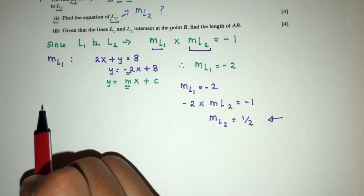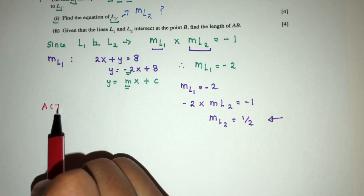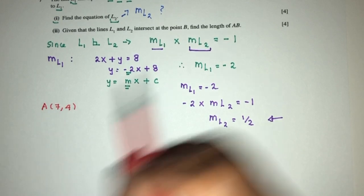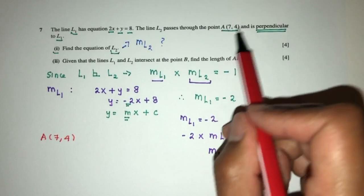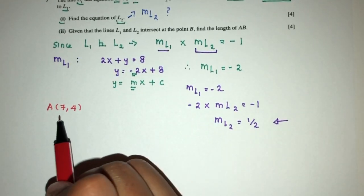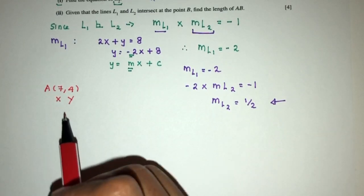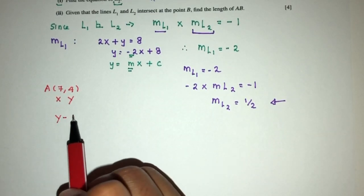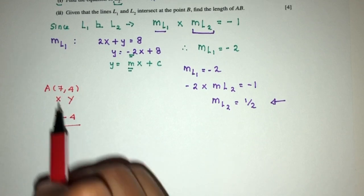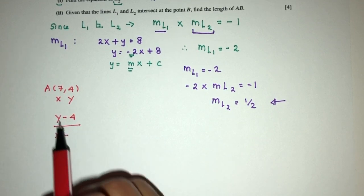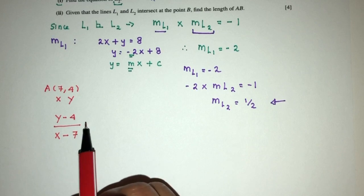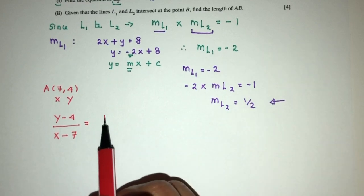So here we have the gradient of the line L2. We know the gradient, we know the passing point, which is (7, 4) given to you by the question. This is my x value, my y value over here. So to find the equation of a straight line, we take the y value minus the corresponding y value over the x value minus the corresponding x value. That will be equal to the gradient, which is half.